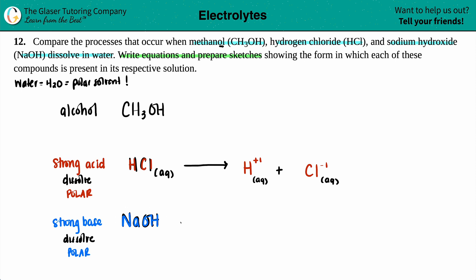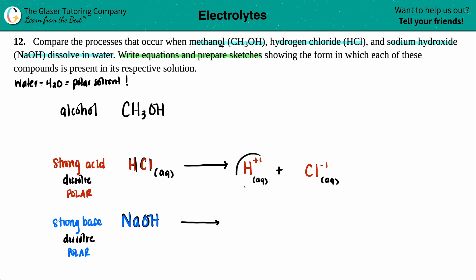Now let's do NaOH. Strong bases are always going to break down 100% because the water is polar — it has partial positive and partial negative charges, so the negatives and positives want to be together. For NaOH, you have sodium with a +1 charge (it's in group one) and the polyatomic hydroxide, which is -1. These are your two ions that are going to be in solution, and it's just aqueous.